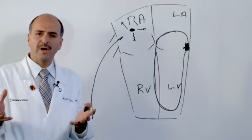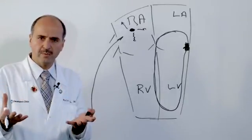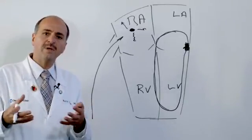We do what we call program stimulation, meaning that we stimulate the heart to try to induce the arrhythmia. We have to see it, so that we can map it.